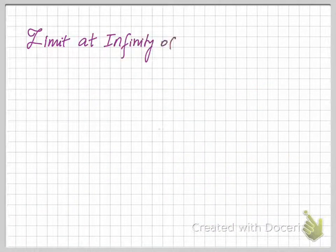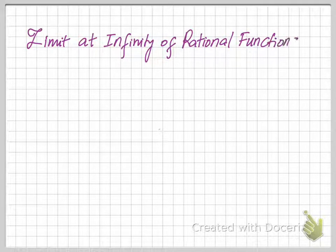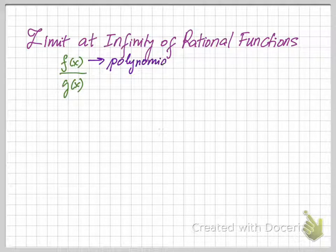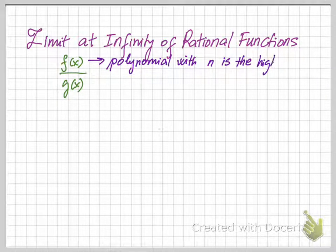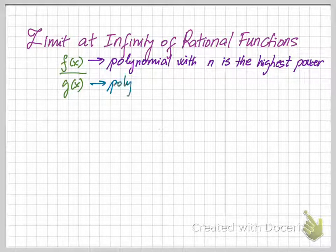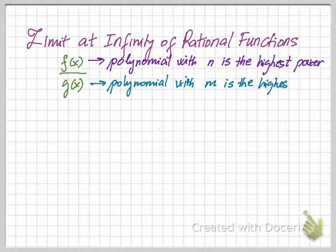Now we can discuss the limits at infinity of rational functions. As you know, rational functions are in the form of a quotient of polynomial f of x and another polynomial function g of x, where f of x is a polynomial function with n as the highest power, and g of x is another polynomial function with m as the highest power.